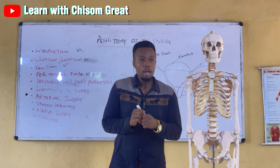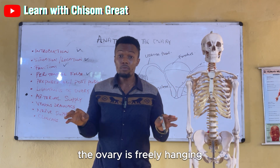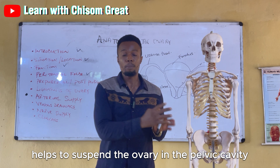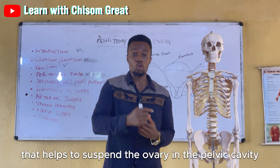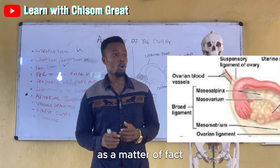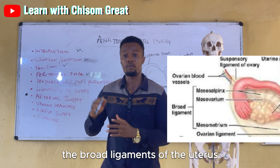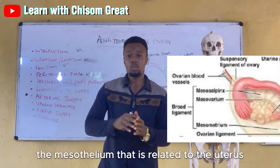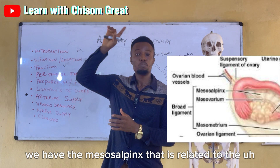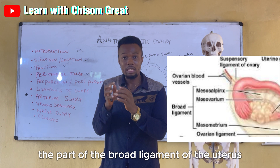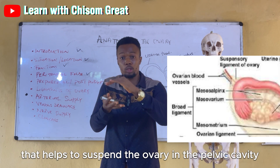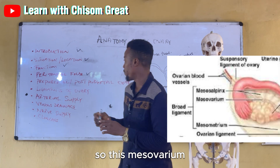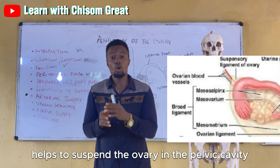The ovary lies in the pelvic cavity and is freely hanging; however, a peritoneal fold helps to suspend it. This peritoneal fold is known as the mesovarium, which is one of the divisions of the broad ligament of the uterus. The broad ligament is divided into three parts: the mesometrium, related to the uterus; the mesosalpinx, related to the uterine tube; and the mesovarium, which suspends the ovary in the pelvic or peritoneal cavity.